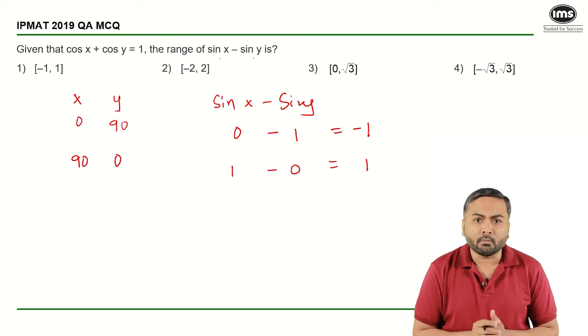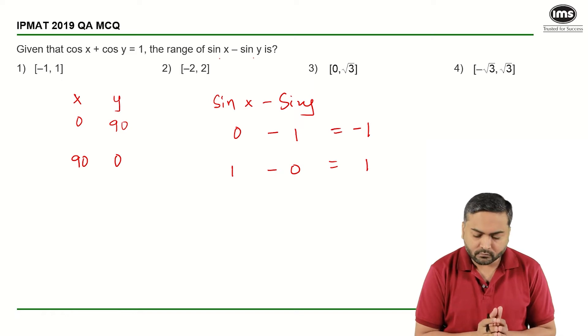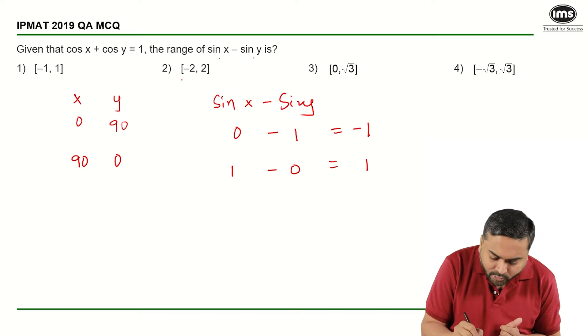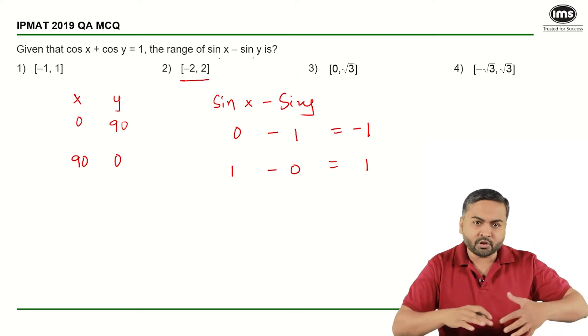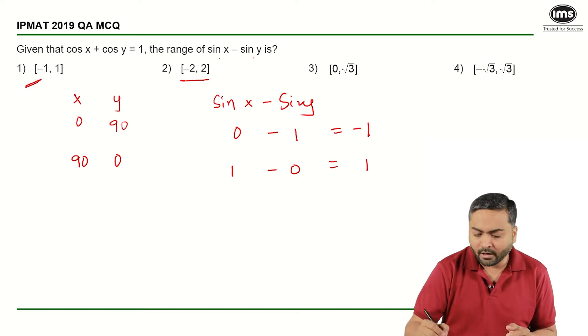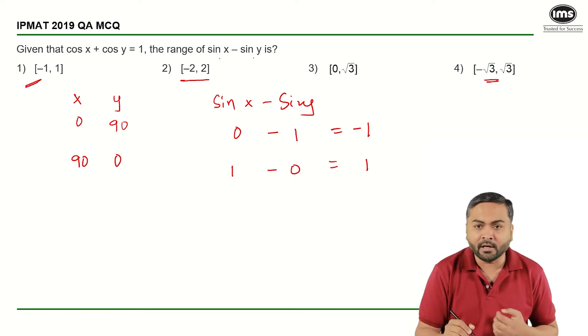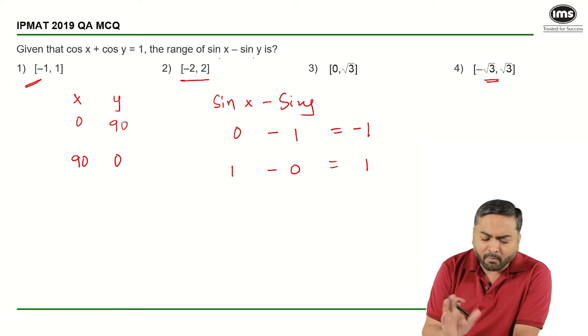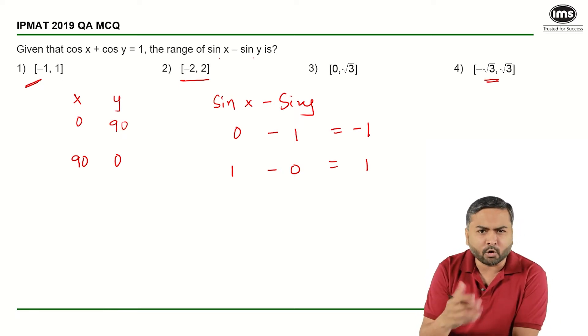So I get a range from minus 1 to plus 1. But is that my answer? Because there is an option which is the superset of this, and there is also another range. So I cannot say it is from minus 1 to plus 1. It may be, but not sure.